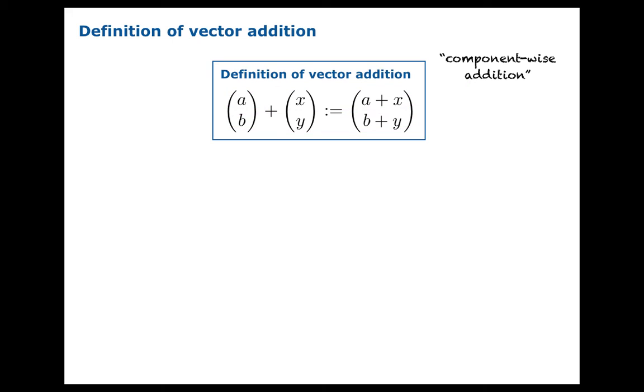You can think about the definition as component-wise addition: you're taking the horizontal components and adding them together, the vertical components and adding them together, and then reassembling a vector out of those results. That's our definition of vector addition — whenever you see two vectors added together, take the components, add them together individually, and reassemble them into a vector.